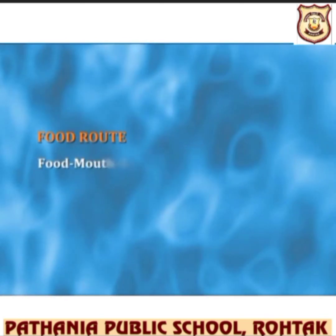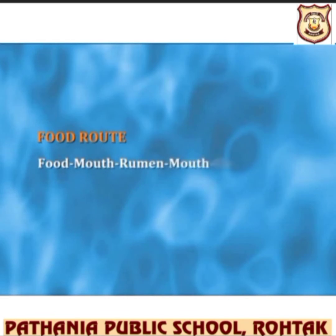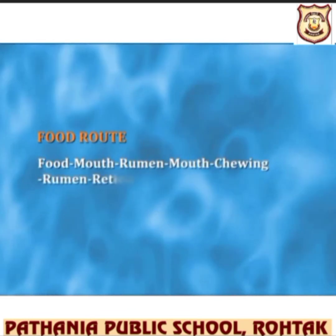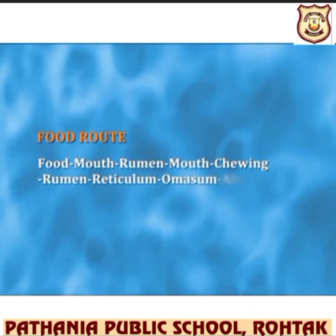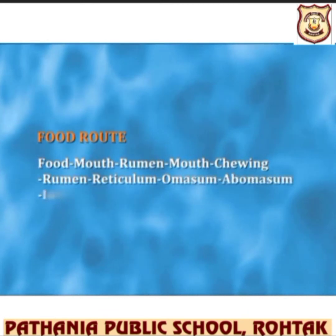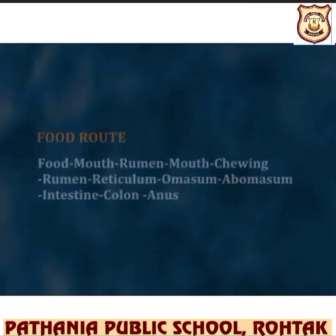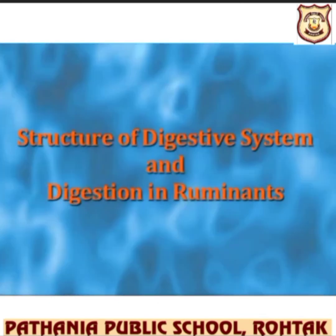Food route: food is swallowed by the mouth, then enters the rumen, then is brought back for chewing, then returns to the rumen, goes to the reticulum, then to the omasum, then to the abomasum, then to the intestine, then to the colon. This is the flow chart of the food route in ruminants.